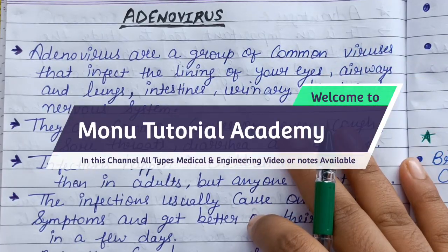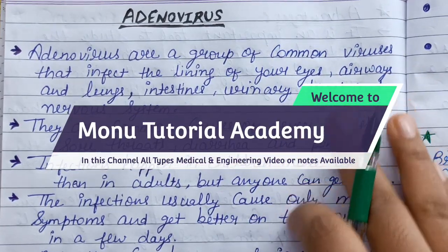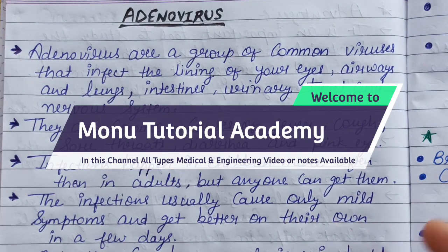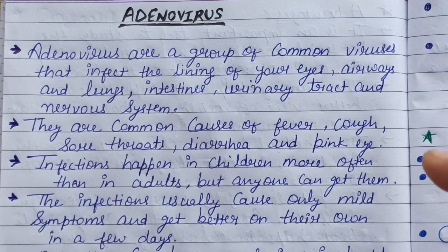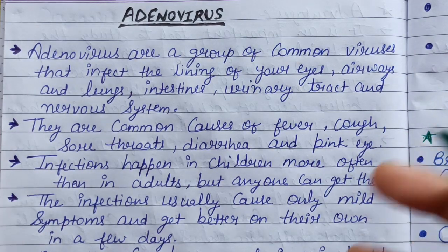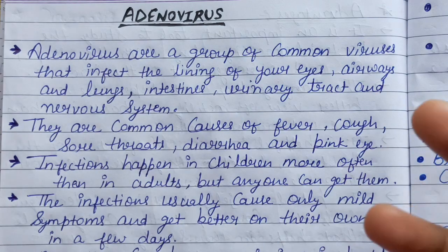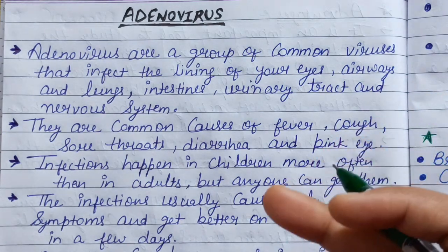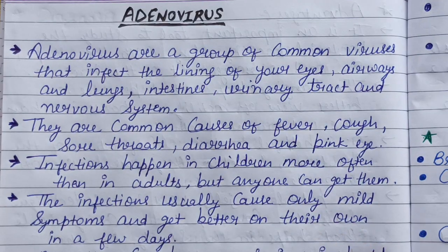Hello friends, welcome to this video. I am going to read about adenovirus. Adenovirus is a common group of viruses. It infects your eyes, your lungs, your intestine, your urinary tract, and the nervous system. So adenovirus affects our body parts.